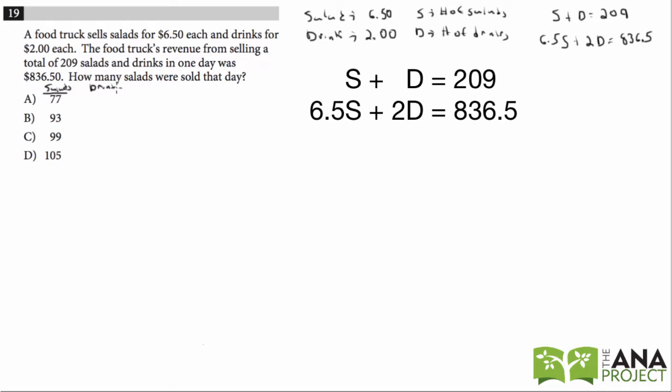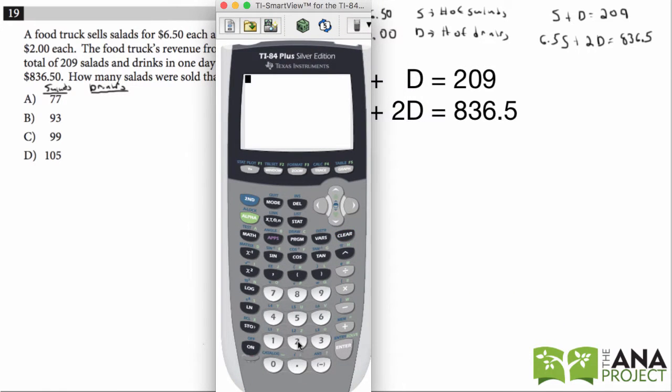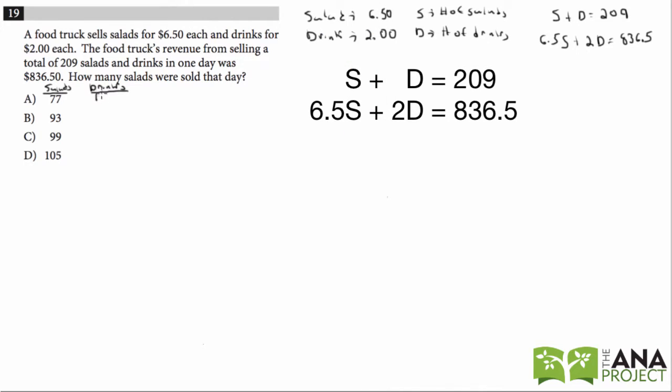So we know that salads plus drinks equals 209. So if there were 77 salads, then there would be 209 minus 77 drinks. So 132 drinks.